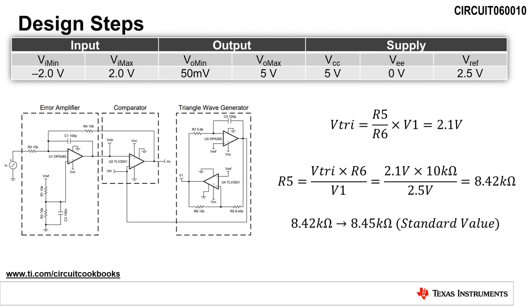The next step is to set the gain of the triangle wave generator circuit. The output of the triangle wave generator must be greater than the maximum input voltage, VI, to avoid a 0% or 100% duty cycle in the PWM output. Therefore, we will set the maximum output voltage of the triangle wave generator to be 2.1 volts.